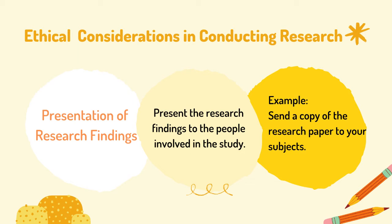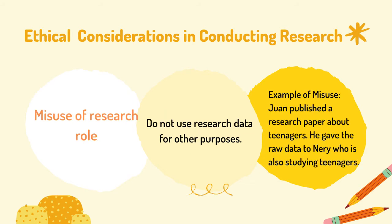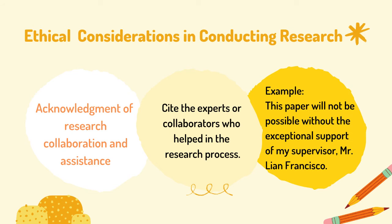Third, presentation of research findings: present the research findings to the people involved in the study. For example, you may send a copy of the research paper to your subjects. Fourth, misuse of research role: do not use research data for other purposes. An example of research misuse is when Juan published a research paper about teenagers and gave the raw data to Neri, who is also studying teenagers. Fifth, acknowledgement of research collaboration and assistance: cite the experts or collaborators who helped in the research process. For example, 'This paper will not be possible without the exceptional support of my supervisor, Mr. Lian Francisco.'